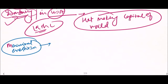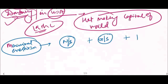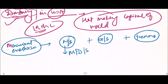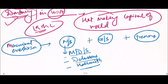Mercurial erethism consists of neuropsychiatric manifestations plus gingivostomatitis plus tremors. Neuropsychiatric manifestations may include manic-depressive psychosis, delusions, or hallucinations. Gingivostomatitis and tremors are also seen in case of mercurial erethism.